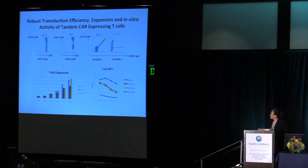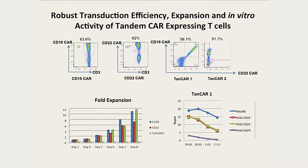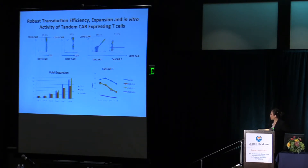The top plot shows TanCAR has similar transduction efficiency compared with the single CARs. TanCAR2 expressed only the CD19 CAR, but TanCAR1 expressed both CD19 CAR and CD22 CAR. Those events are displayed on the diagonal, indicating equal molar expression. The lower panel shows TanCAR has similar fold expansion in vitro. A chromium release assay with TanCAR1 shows specific cytolytic activity against CD19-only, CD22-only, or both antigens, but no activity against NGFR-expressing cells.